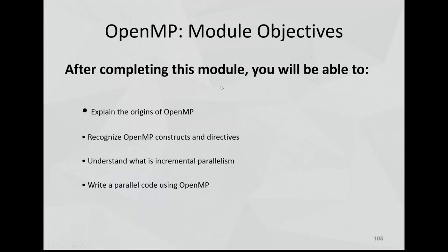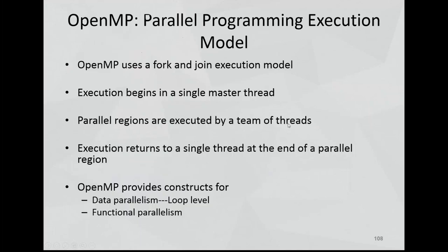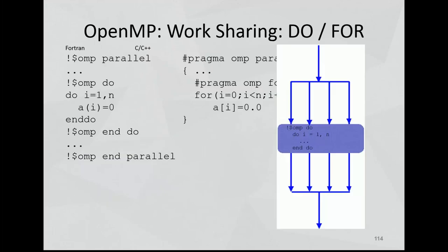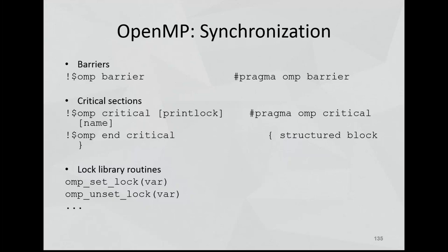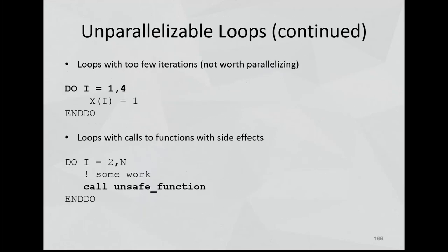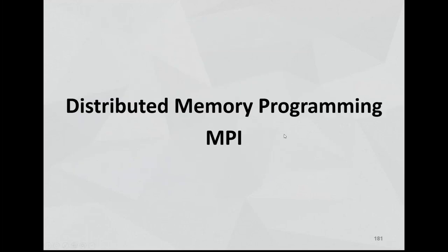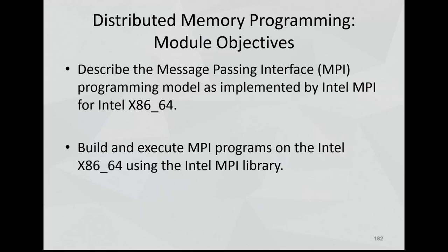Shared memory programming — OpenMP has been around for some time. Differences in Fortran versus the other. This covers off some of the areas we did the other week, so I'm not going to spend much time on it. What we want to ensure is that our code runs correctly. That takes us to distributed memory programming — MPI. OpenMPI is one of the free versions of the message passing interface, and there's an Intel MPI as well.